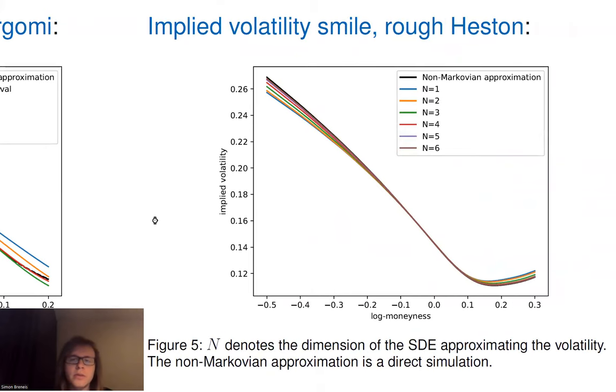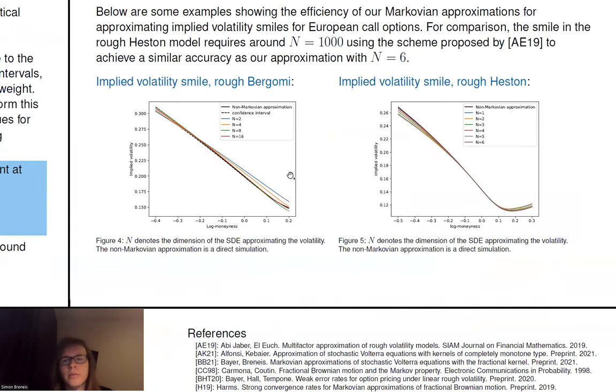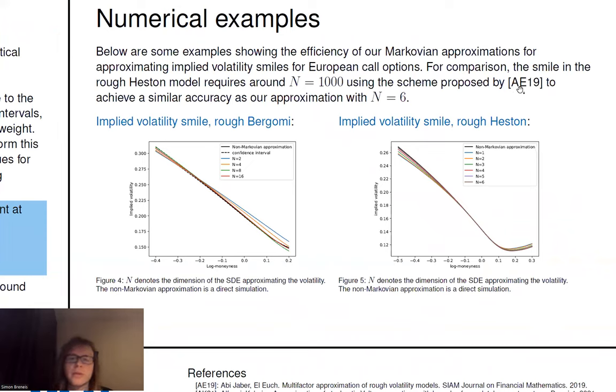Similarly, for the rough Heston model, which is another rough volatility model, we can see that already for n equals 5 or 6, we can barely see a difference between the Markovian approximation and the non-Markovian actual process. And this is also, again, a significant improvement to what we had before. So for example, if we use the quadrature points that's proposed by ABE and Euch, they would need to use about 1000 points to achieve a similar accuracy as we do with six points.